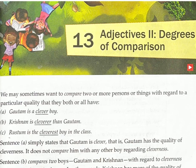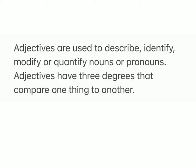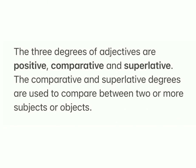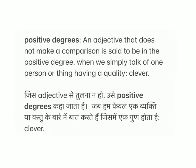Lesson 13: Adjectives 2 – Degrees of Comparison. Adjectives are used to describe, identify, modify, or quantify nouns or pronouns. Adjectives have three degrees that compare one thing to another: positive, comparative, and superlative. The comparative and superlative degrees are used to compare between two or more subjects or objects.